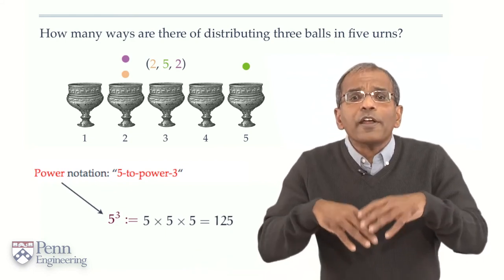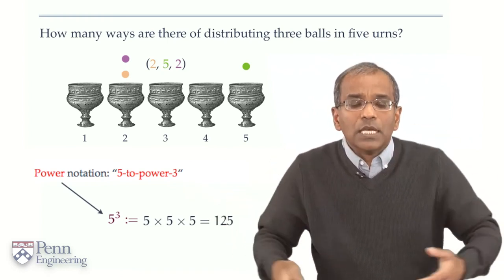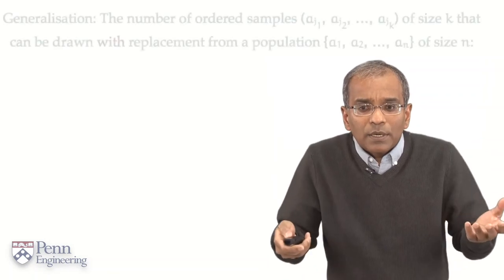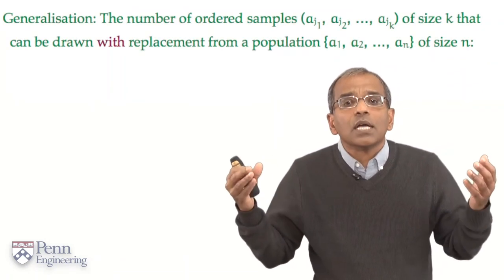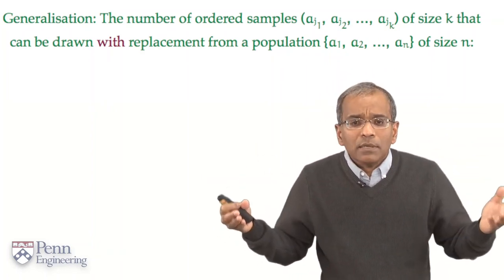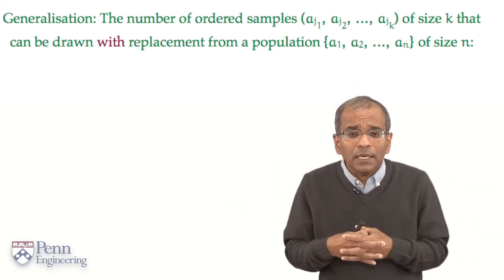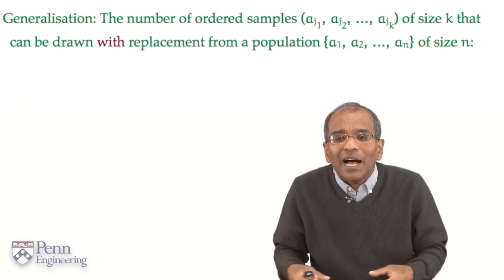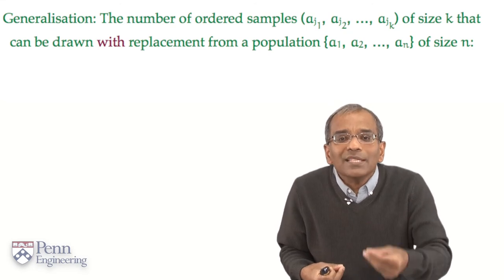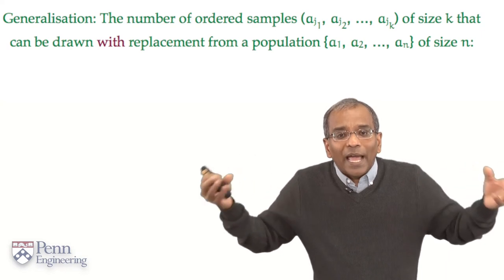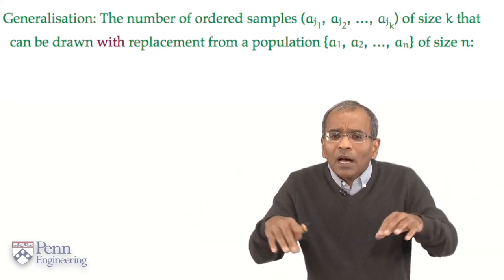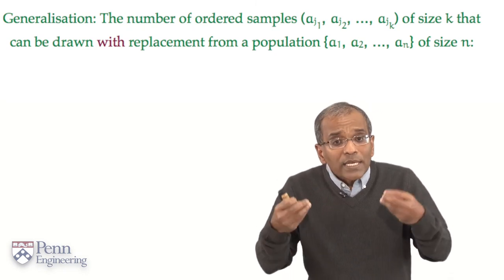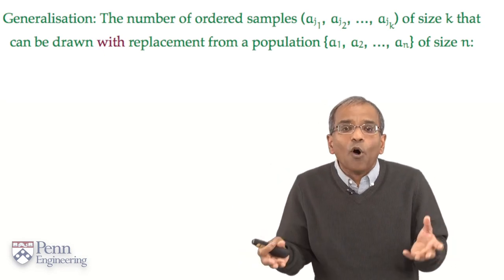Once we've understood the basic principle, we very quickly abstract out and try to find a general answer. So, let's put in some notation. It's going to look a little formidable at first sight, but if you keep this example in mind, it'll become transparent. So, here is the question. Suppose I start with a population with n elements, A1 through An enclosed in curly brackets because it is a set. The order does not matter. Suppose I select from this population an ordered sample of size k. I'm selecting 3 urns out of the 5 to place my 3 balls in some order. I'm selecting k urns out of my n to place my k balls in some order. How many different ways can I specify this? How many different ordered samples of size k are there when sampling is with replacement from an underlying finite population of size n?